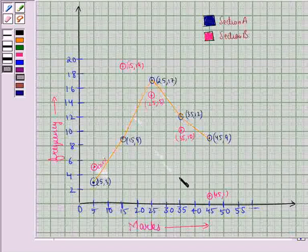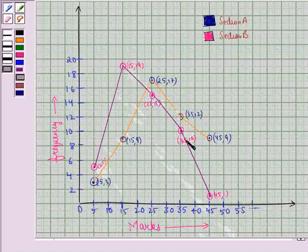So like this we plot the points for the section B. Now let us join these points also. So like this we join all these points also to get a frequency polygon for section B.